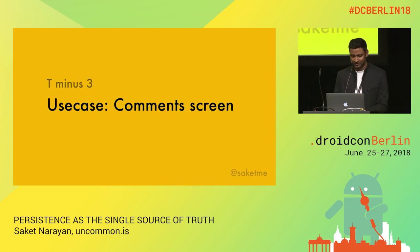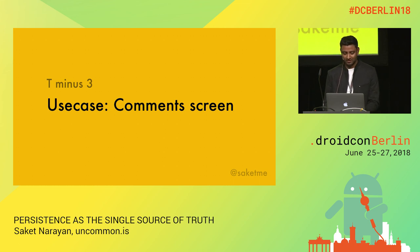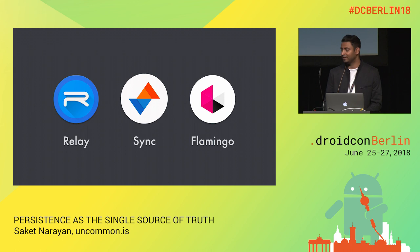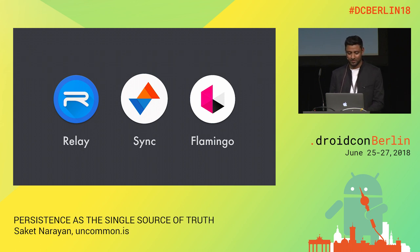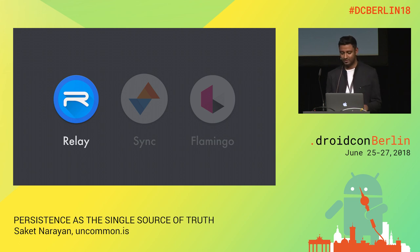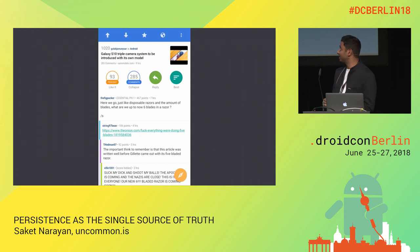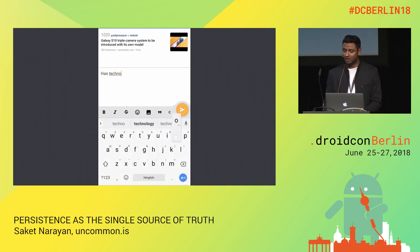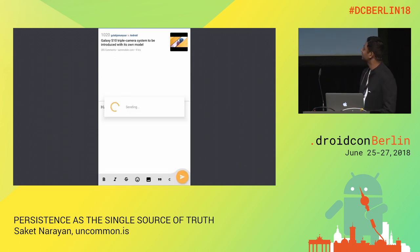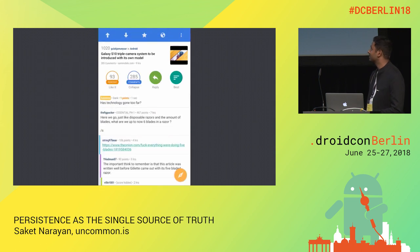This brings us to the next use case: the comment screen, where the user can post messages. I'm going to show you how some very popular applications handle this. The first app is Relay for Reddit — a quite nicely designed application — but its commenting experience is my least favourite part of it. When you compose a new comment, Relay shows a blocking progress dialog, so you're forced to wait until the call goes through. And in case you tap outside, which is possible, it will cancel the network call. On top of all this, the progress dialog is not retained across config changes.